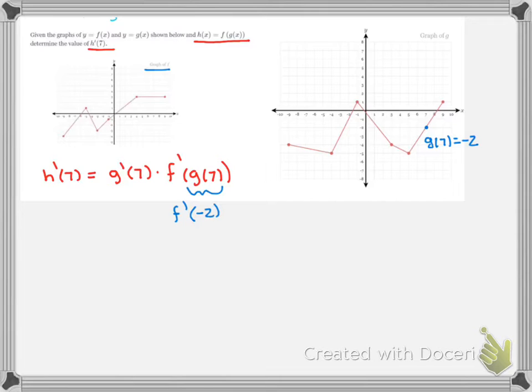Let's zoom in here. Negative 2 right here. We don't want that value, we want the slope of the graph. That slope is going up 1 over 1, so the derivative at negative 2 is 1, times G'(7).